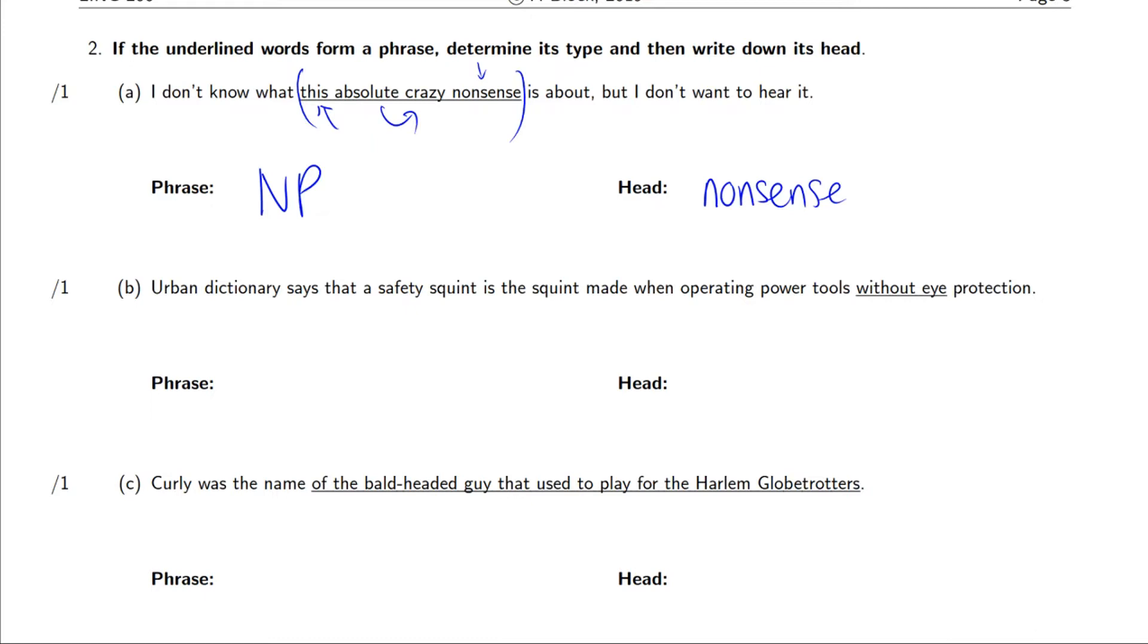Next one, we have when operating power tools without eye protection, but we notice that protection is not part of this phrase. But without is a preposition, and prepositions introduce entire noun phrases. So when we say without eye protection, what's the most important word after without? Are we saying it's the squint made when operating power tools without eyes or without protection? It's without protection. So protection is the head of the noun phrase that the preposition is including. But protection isn't being included here. So this is actually not a complete phrase, which means that it has no head.